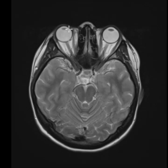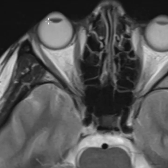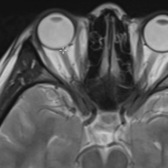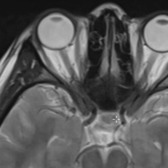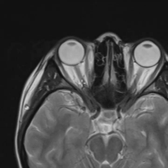This is the right eyeball. You can see the little dark thing in front — that's the lens. Off the back we see the optic nerve coming back, joining with the optic nerve on the left side, coming together at what's called the optic chiasm, and then branching back apart. The optic nerve on the right looks normal; I do not see evidence of a demyelinating plaque, so no evidence of MS affecting the optic nerves.